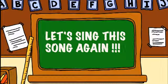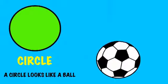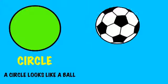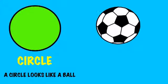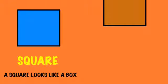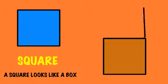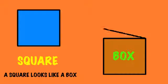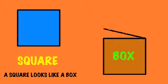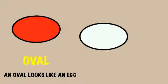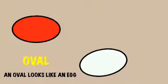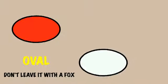A circle looks like a ball. A square looks like a box. An oval looks like an egg. Don't leave it with a fox.